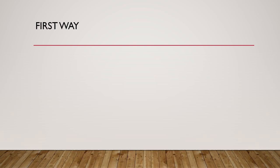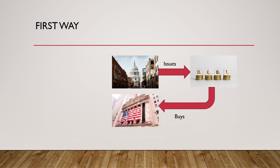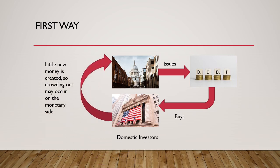In the first way, the government issues debt in the market. This debt is bought by domestic private investors — it is the domestic private investors' money that funds the fiscal deficit. In this case, little new money is created in the economy, and because of that, the phenomenon of crowding out may occur on the monetary side. Since the money pool is almost the same and the government is taking an increased share, lesser money remains for private players, which can lead to increased interest rates and lower equity investments.